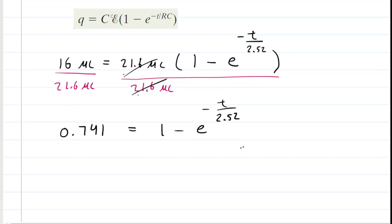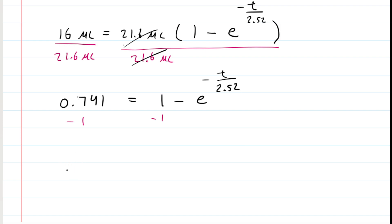Now we're going to just continue solving for t. We can subtract 1 from both sides. So on the left side, that gives us negative 0.259. And then over here, these ones cancel. So now we have a negative in front of our exponential term. We can divide both sides by negative 1. That would cancel the negative on each side.